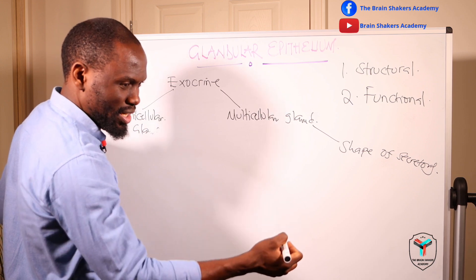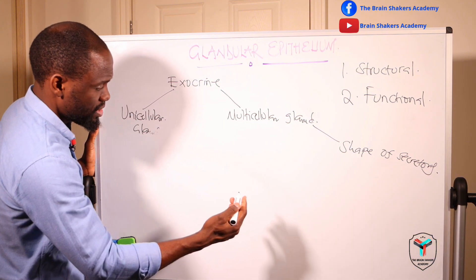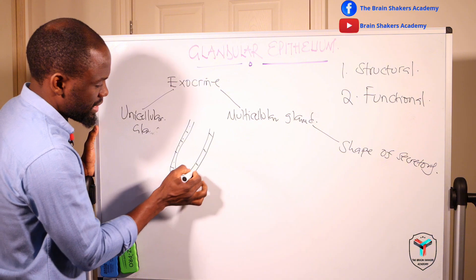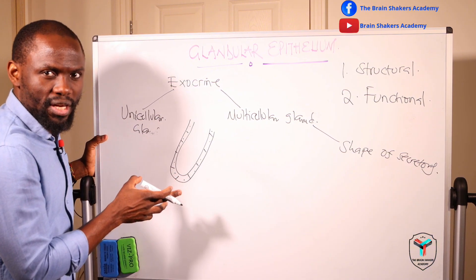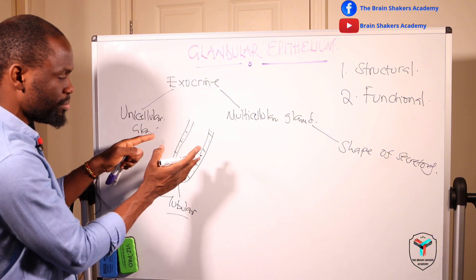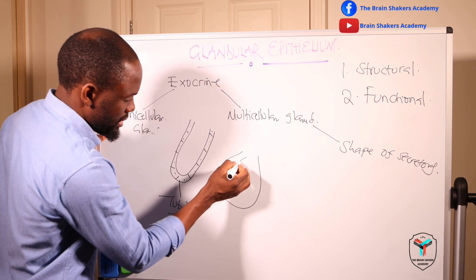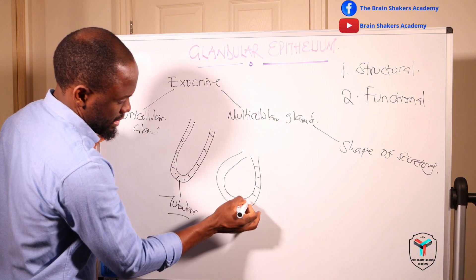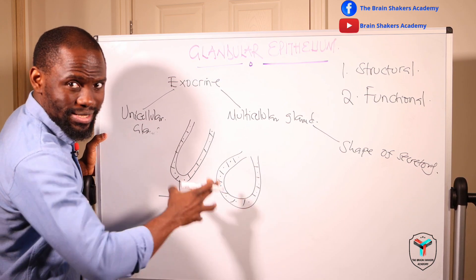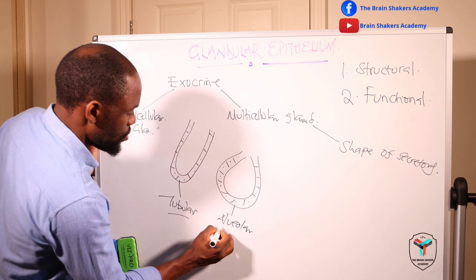When looking at the shape of the secretory portion, you could have a tubular or an alveolar form. If the portion of the gland producing the fluid takes the form of a tube — with cells lining that tube — it is called tubular. If the shape of the secretory portion is rounded, like alveoli, with cells lining the gland in that rounded shape, it is called an alveolar or acinar gland.